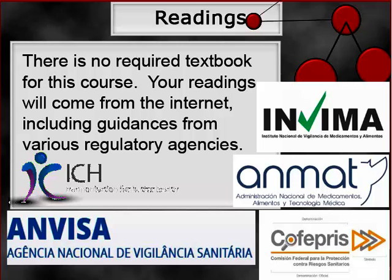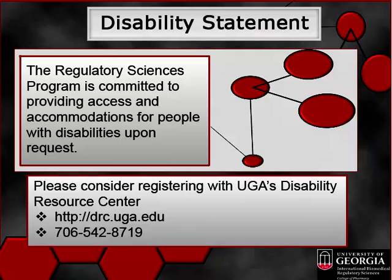Be sure to keep up with the readings. The Regulatory Sciences program is committed to providing reasonable access and accommodation for people with disabilities. If you have a disability and require accommodation, please contact me, Jonna Hodges. We have tried to make all of our course content accessible. If, however, you find content that is not accessible and you require things like closed captions or transcripts for lectures or live sessions, like a Blackboard Collaborate session, please contact me early on so I can make the necessary arrangements for a transcription or closed caption service. Also, please consider registering with UGA's Disability Resource Center.